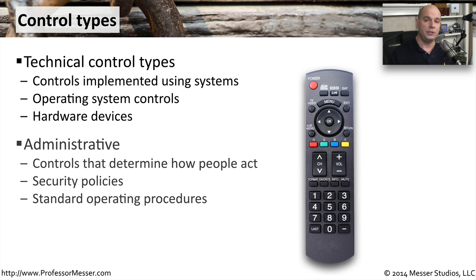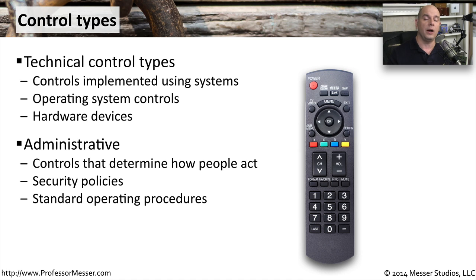There are also administrative control types as well. These are policies that help control how people act. If you're going to set up security policies — formal policies that you might have in a book or an online resource — or maybe you have standard operating procedures so that people know how to handle a visitor that comes into the organization, what to do when somebody is brought on board as a new employee, and what to do when somebody leaves the organization. Those are all wrapped around the administrative side of those control policies.